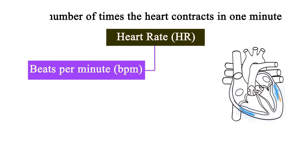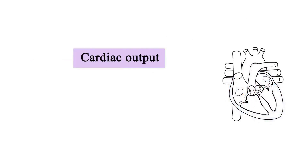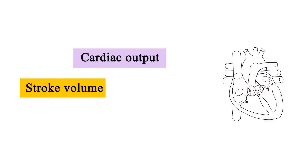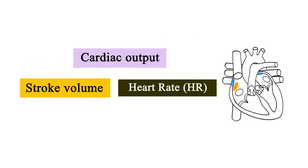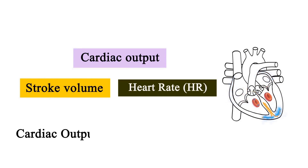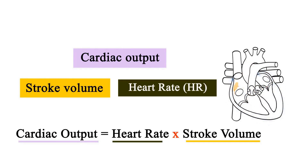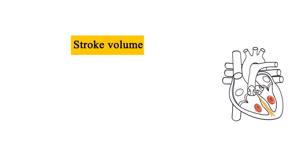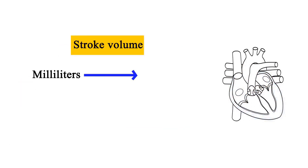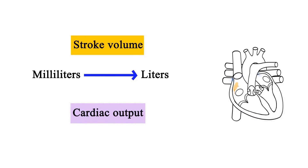Therefore, cardiac output can be calculated by multiplying stroke volume by heart rate and is represented by the formula: cardiac output equals heart rate times stroke volume. The milliliters measured for the stroke volume are converted to liters, making the units for cardiac output in liters per minute.